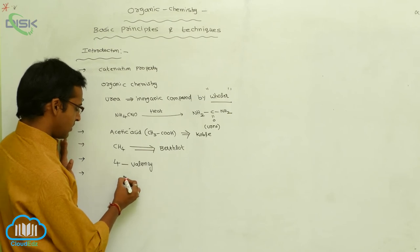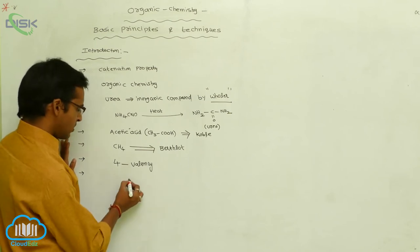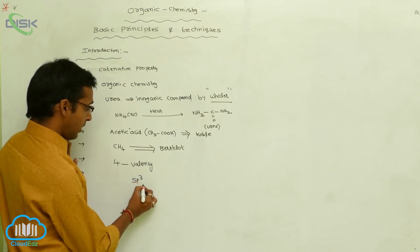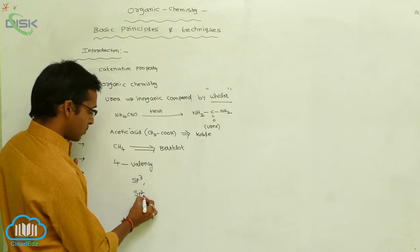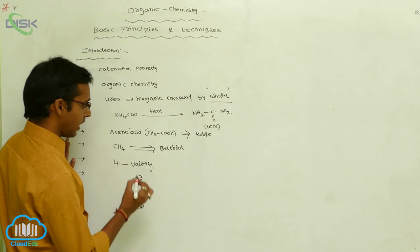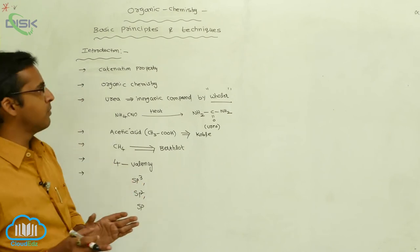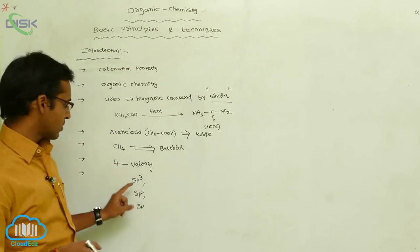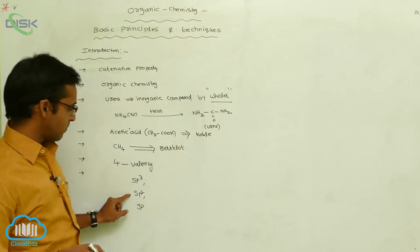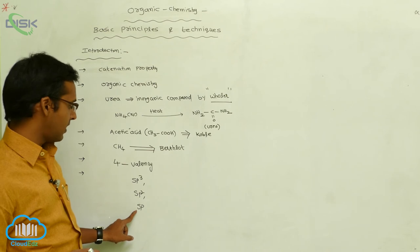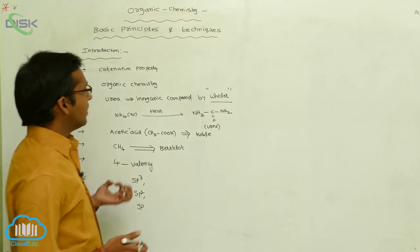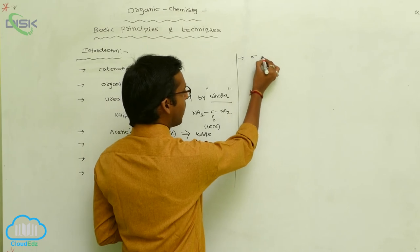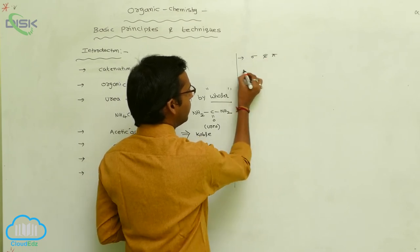Carbon is involved in sp³ hybridization, sp² hybridization, or sp hybridization. In organic chemistry, we generally discuss only three types of hybridization: sp³, sp², and sp. Carbon compounds generally form sigma bonds and pi bonds.